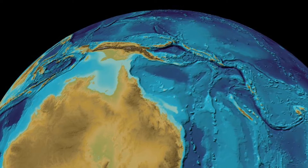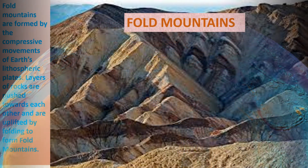There are three major relief features that characterize the continents: mountains, plateaus, and plains. There are two types of processes that act upon the earth to form various relief features or landforms, and these two processes are endogenic and exogenic.